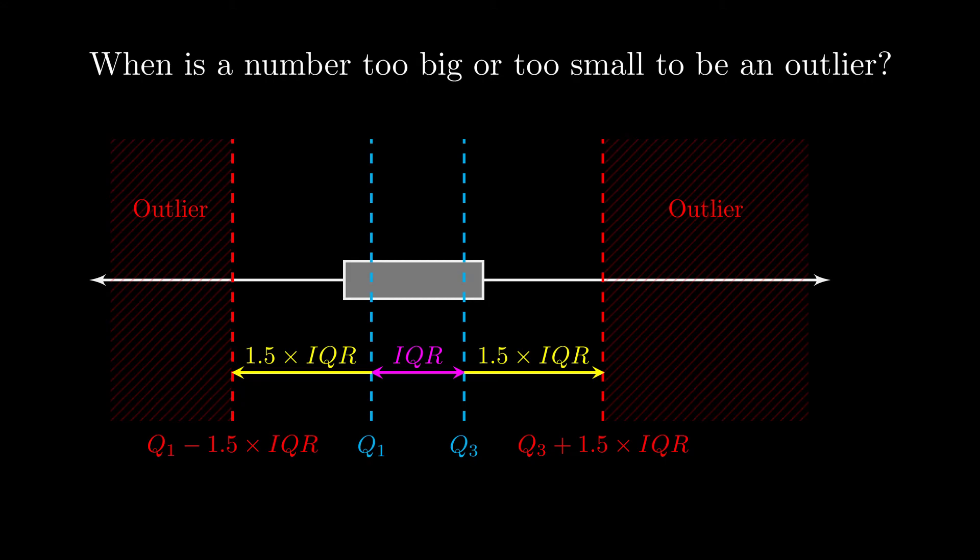You might want to pause this and maybe write this down. Those limits, those boundaries, at which point we start calling things outliers, are the upper quartile plus 1.5 times the interquartile range, or the lower quartile minus 1.5 times the interquartile range.